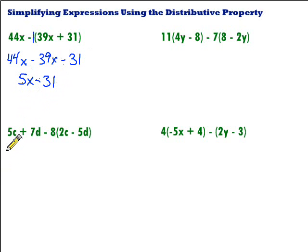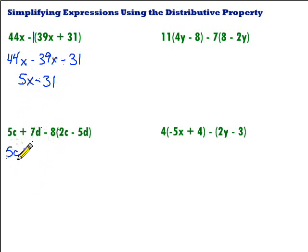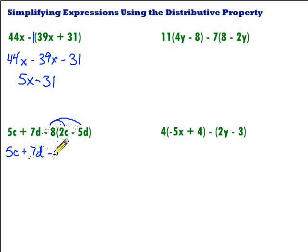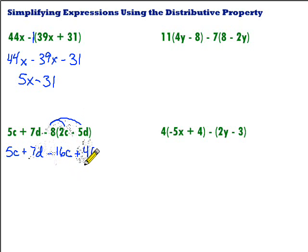Let's take a look at this next one: 5c plus 7d minus 8 times the quantity 2c minus 5d. We've got parentheses, so we're going to use the distributive property. The 5c and 7d have no distributing going on, so we just bring those right down. Then we keep the minus with the 8 and distribute negative 8 through each term inside the parentheses. Negative 8 times 2c gives us negative 16c. Then negative 8 times negative 5d gives us positive 40d.